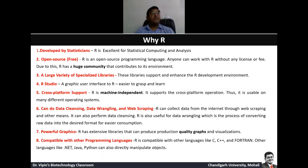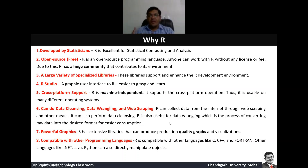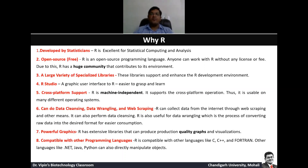R is also compatible with other programming languages such as C, C++, and Fortran. Other languages like .Net, Java, and Python can also directly manipulate objects from R. This interoperability allows you to take output from one particular program and bring it back into R or the other way around, which is important for complex analytical workflows.